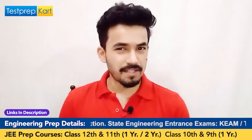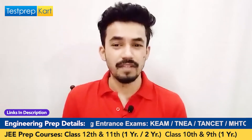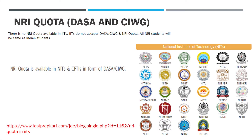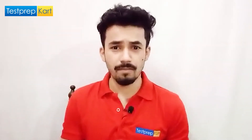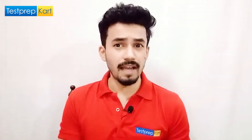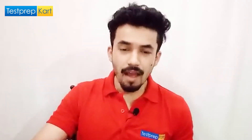As per the latest guidelines of DASA and CIWG, there is no NRI quota in the IITs. That does not mean NRIs cannot take admission — they can, but they have to clear JEE Advanced with the required cutoff like general students. On the other hand, there is an NRI quota in the NITs. There are a total of 29 NITs which have a reservation for NRIs under DASA and CIWG.